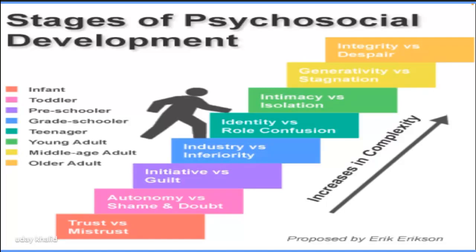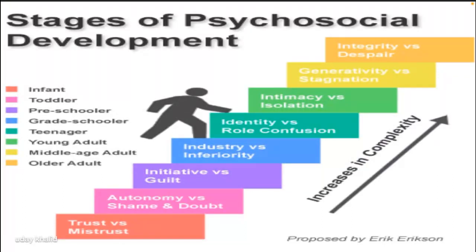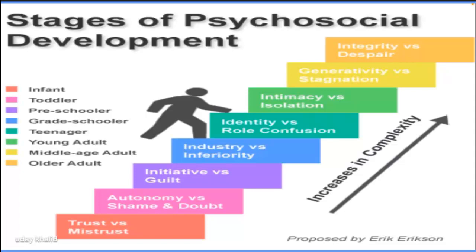After adolescence comes early adulthood — the stage of Intimacy versus Isolation. The task here is to form an intimate relationship. In the usual course, this involves heterosexual intimacy channeled through marriage or other forms of arrangements depending on the culture and society.